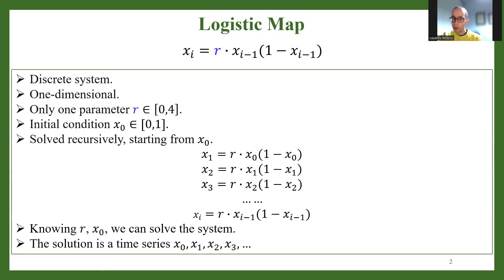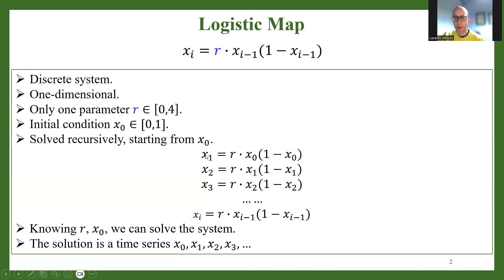Let me remind everybody: this is a one-dimensional, discrete-time system. It has one parameter r and one initial condition x0. How do we solve this? If I know r and x0, it's simply a recursive formula — a for-loop. I start computing x1, then from x1 I compute x2, then x3, x4, and so on — so I have a time series. This logistic map has very rich behavior.